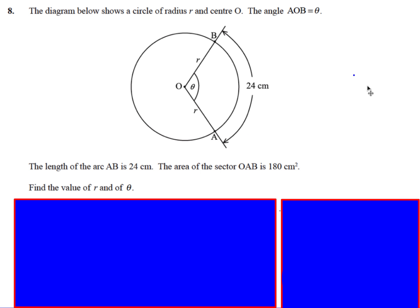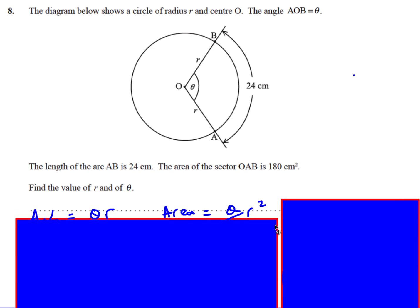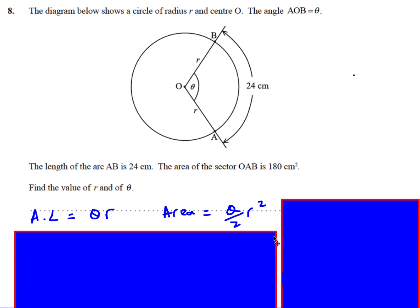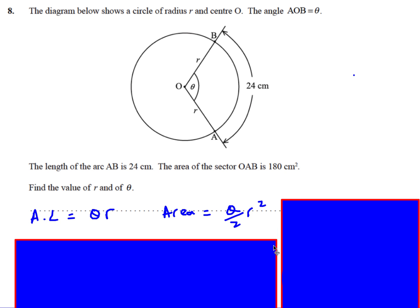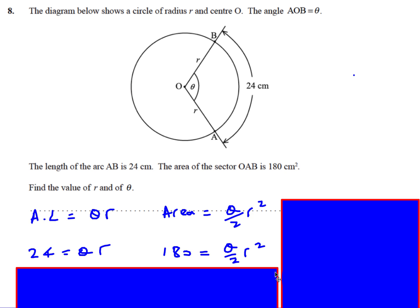This one's a bit more difficult. I've got a circle, I've been given the arc length and the sector area, and I need to find r and θ. Write down both formulas: arc length = θr, and area of sector = θ/2 × r² (in radians). Substituting the known values: 24 = θr and 180 = θ/2 × r².